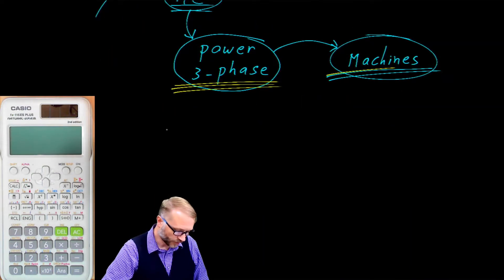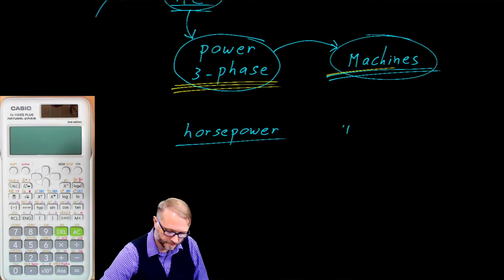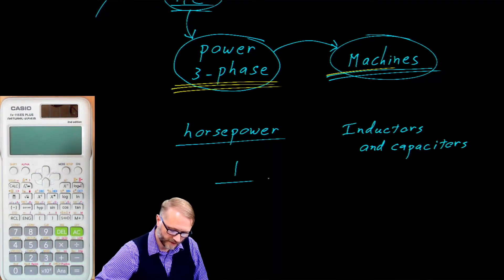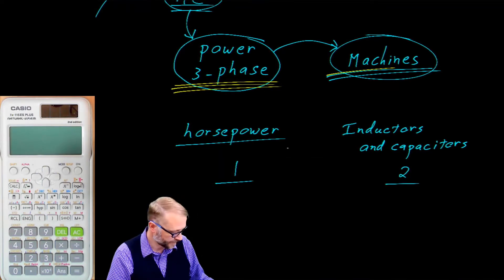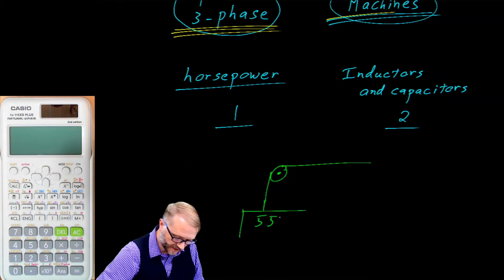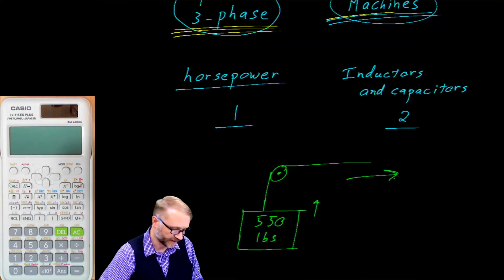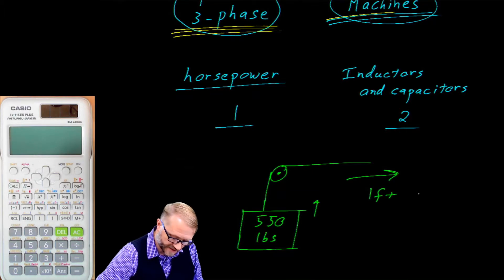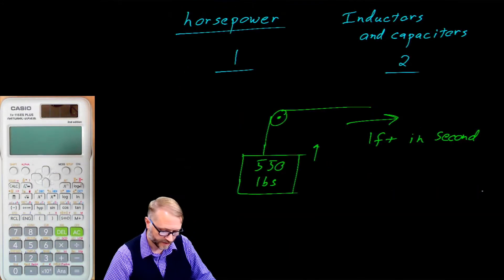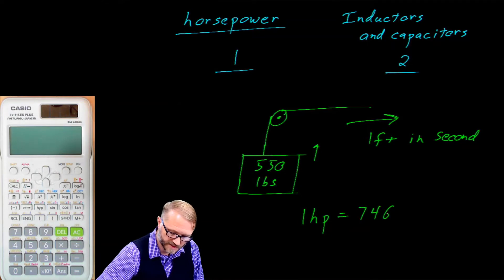This particular lecture will be pretty short. We'll talk about horsepower, and then inductors and capacitors. For a technical definition of horsepower, we can talk about a pulley, a 550-pound weight, and lifting that weight by pulling a rope at a rate of one foot in one second. Another way to talk about horsepower is that one horsepower equals 746 watts.